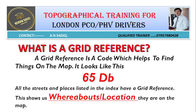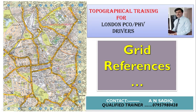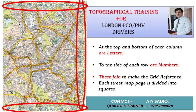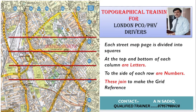I would like to explain the grid reference in detail. Please go to page number 133 of the master atlas of greater London. This is the map page of different areas in greater London. Each column at the top and bottom has letters, as highlighted with a circle, and to the side of each row are numbers, also highlighted with a red circle. These join together to make the grid reference. Each street map page is also divided into squares.